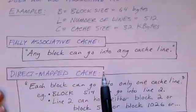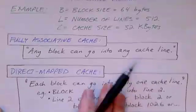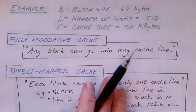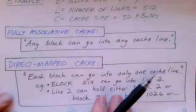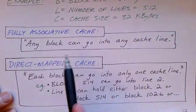In a fully associative cache, any block can go into any cache line. It's associative. It doesn't matter where you put it.